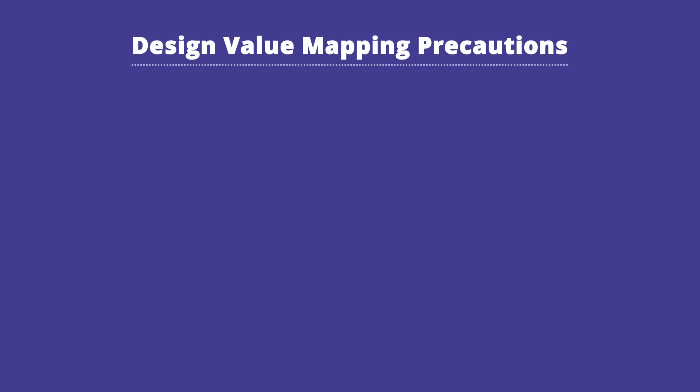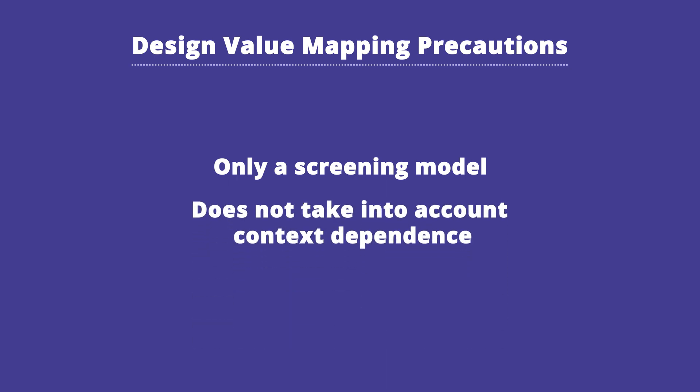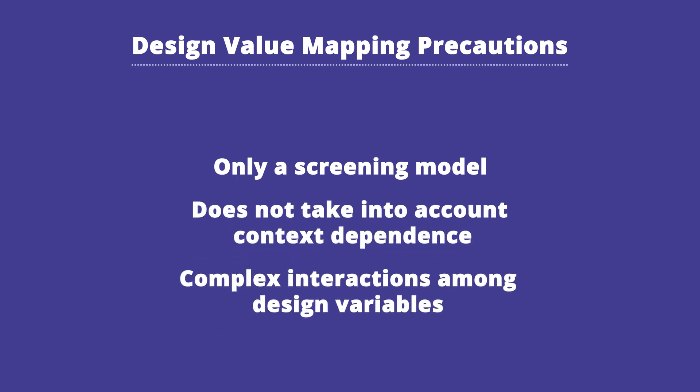A precaution of using a DVM is that it's a poor first-order model — really only a screening model for focusing on design variables that most affect the value space. It also does not take into account context dependence and complex interactions among design variables. These will be accounted for to the extent possible in the actual modeling and evaluation phase that happens later. You will be using DVMs in this week's project.